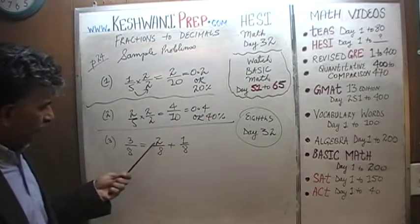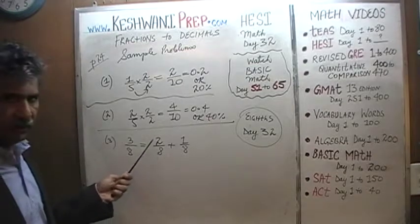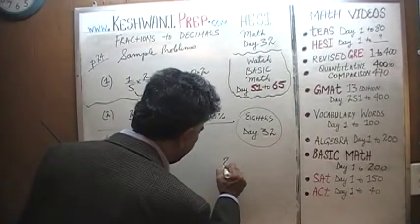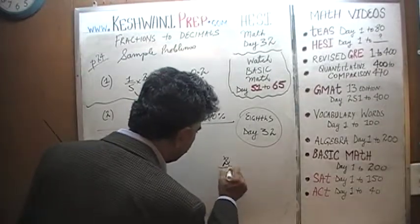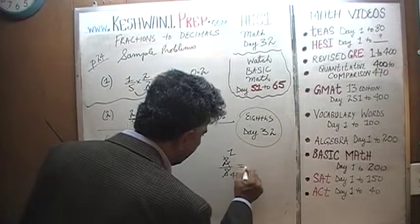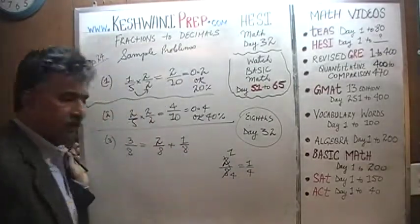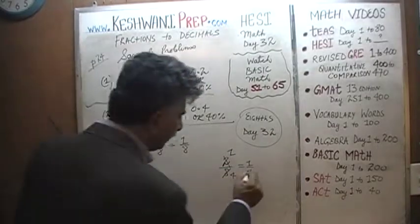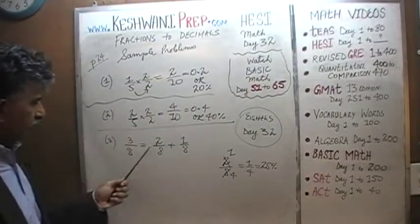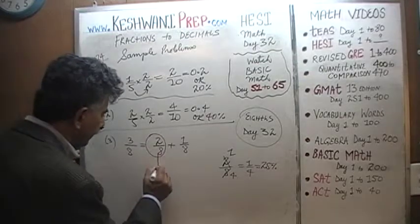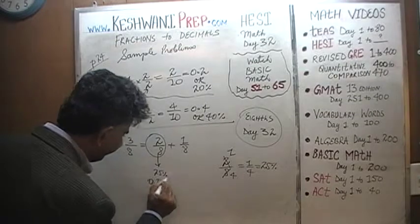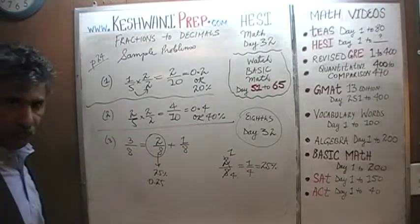What we need to understand is that three-eighths is nothing more than two-eighths plus an eighth. You with me? Are you able to see that two-eighths, if you were to reduce it, if you were to divide top and bottom by two, here's your two-eighths. If you were to divide top and bottom by two, two divided by two is one, and eight divided by two is four. If you reduce it, two-eighths is just a quarter. And a quarter, we know, a quarter of anything is just twenty-five percent. Therefore, two-eighths is simply twenty-five percent or point two-five. Are you with me so far?